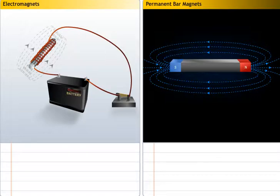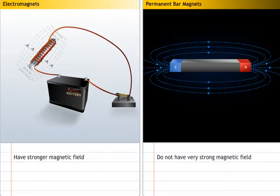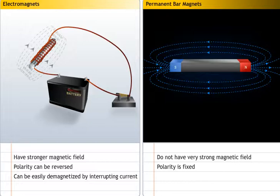Electromagnets are more useful than permanent bar magnets in the following ways. Electromagnets have a stronger magnetic field than permanent bar magnets. It is possible to reverse the polarity of electromagnets, but not in the case of permanent magnets. Electromagnets can be easily demagnetized by interrupting the current. However, it is difficult to demagnetize permanent magnets.